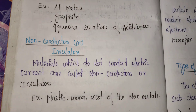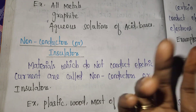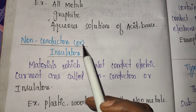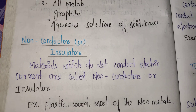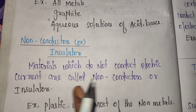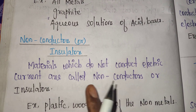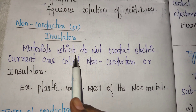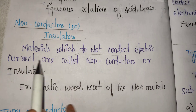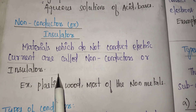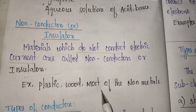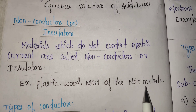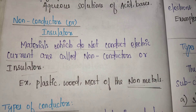Then, non-conductors are insulators. Materials which do not conduct electric current are called non-conductors or insulators. Do not conduct electric current — so it is called insulators. For example: plastic, wood, rubber. Most of the non-metals do not conduct current.